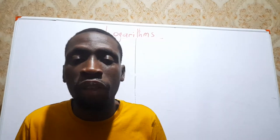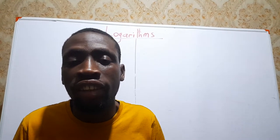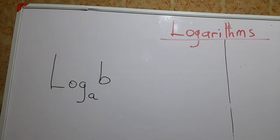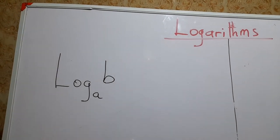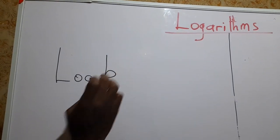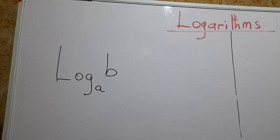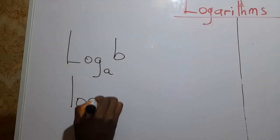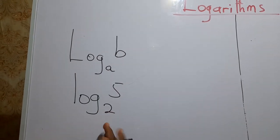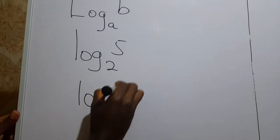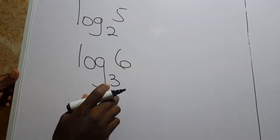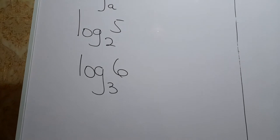This will be a very interesting engagement so please watch the video to the end. So logarithms are written like this — when we write log b, the base is a and b is the number. So we say log 5 base 2, or log 6 base 3. I hope you know how to read it now.